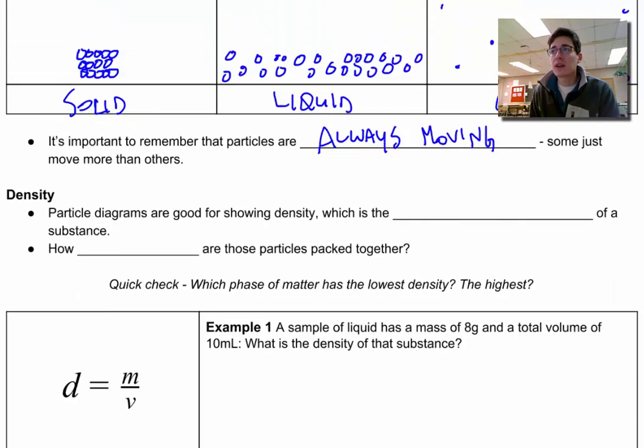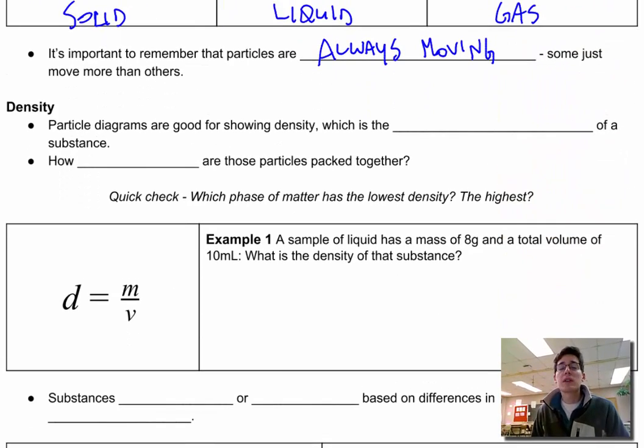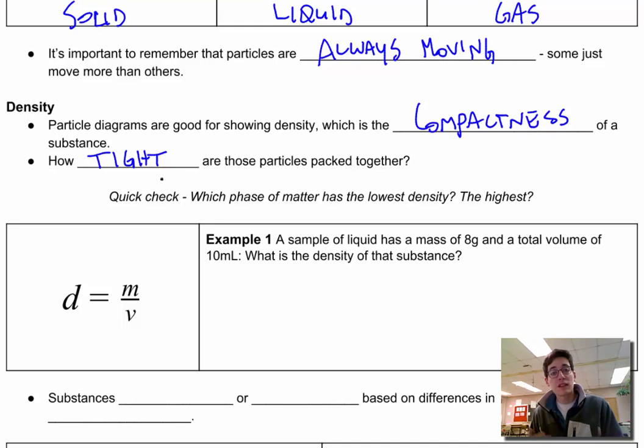So let's look at density now that we've got these particle diagrams. Density is how we describe the packing of the particles. Particle diagrams are good for showing density, which is essentially the compactness of a substance. How tight are those particles packed together? So real quick, just think to yourself, which phase of matter would you expect to have the lowest density? Which one would have the highest density? We're going to be talking about exceptions to those rules. We're going to be talking about substances, in particular water. How does its density change based on its phase of matter?